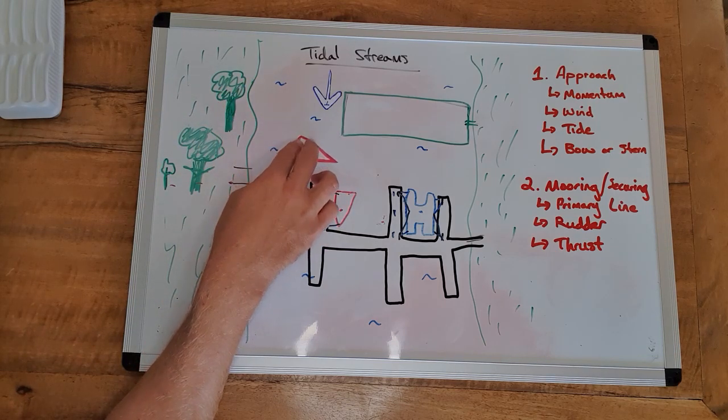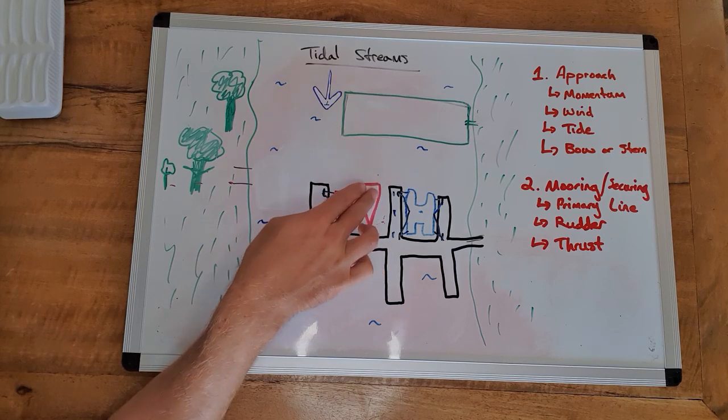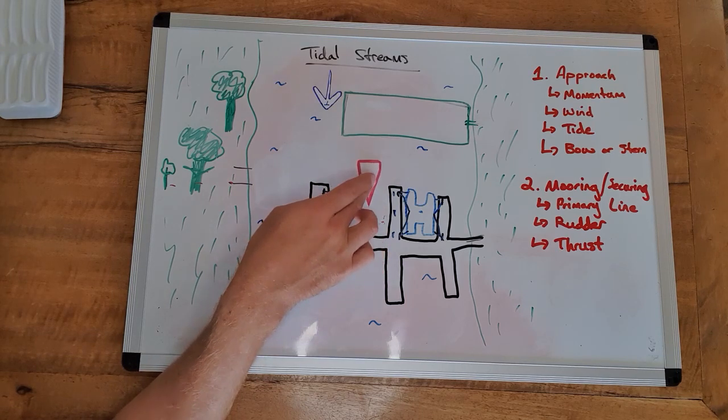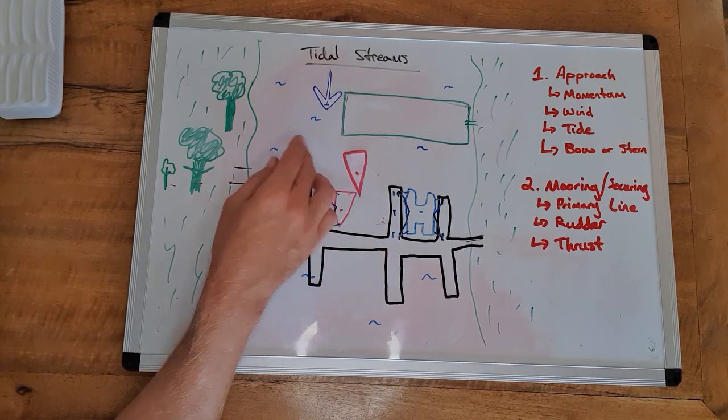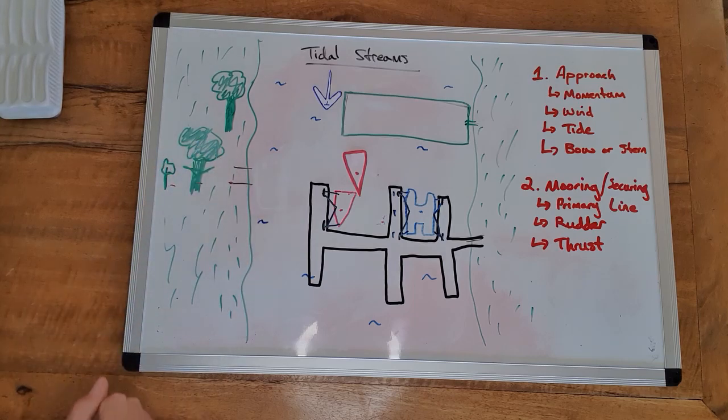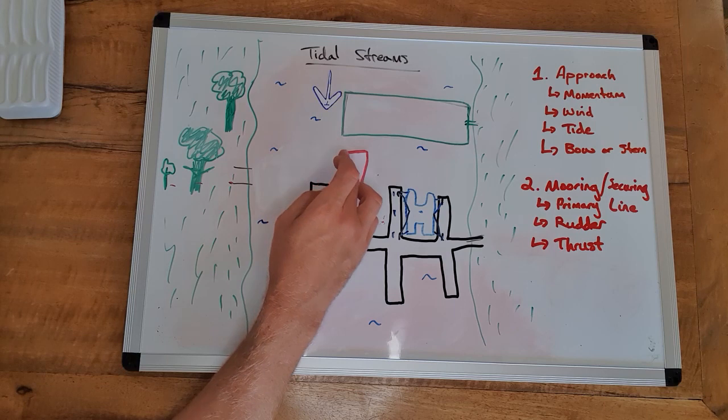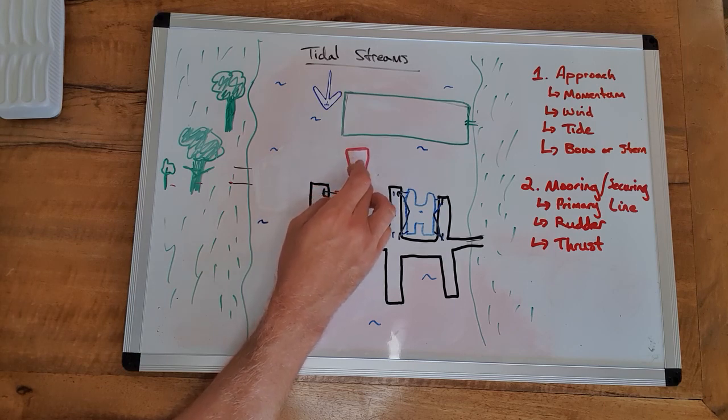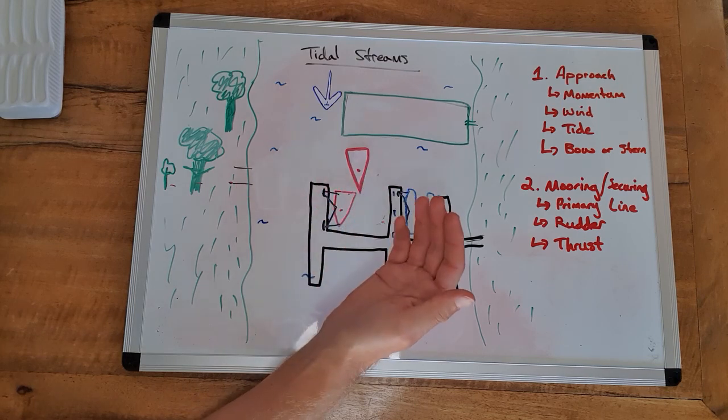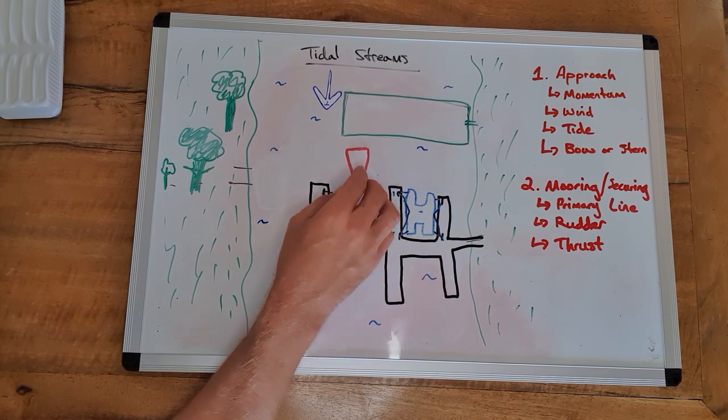When you're coming forward with the tide and then you need to stop the boat and move it backwards against the tide, you need a lot of stern propulsion, a lot of reverse propulsion, to get the boat moving backwards against the water. Because if you don't get that happening then you don't have any water flowing across your rudder and you don't have any steerage.